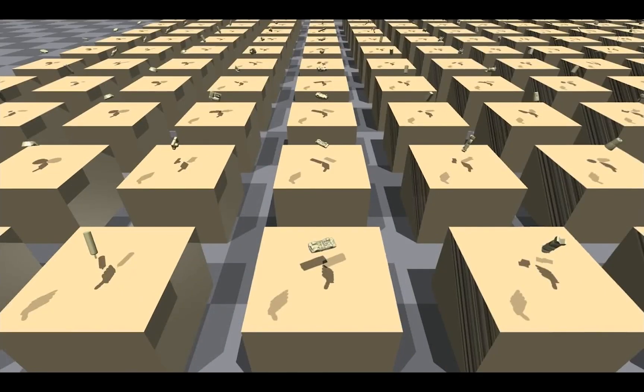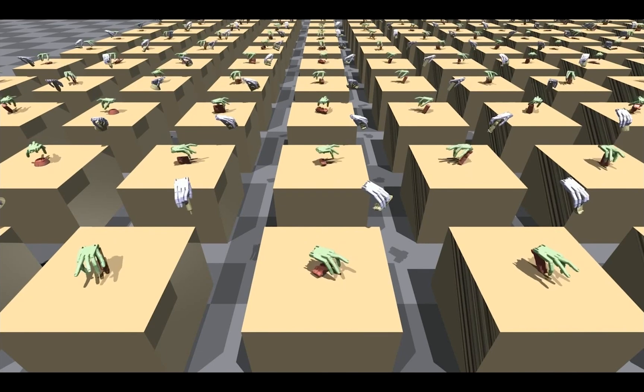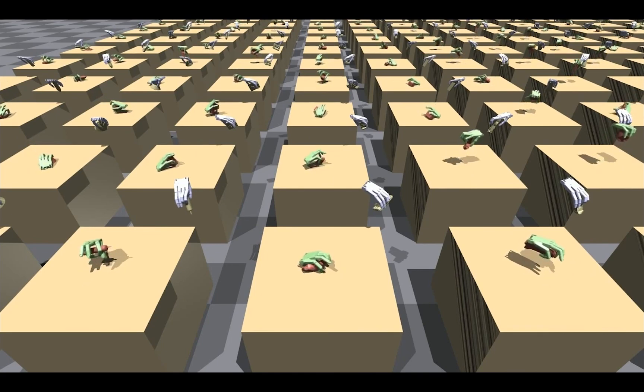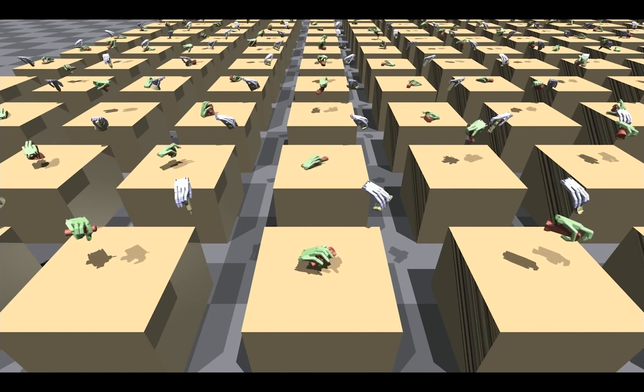We test our trained policy under two settings. First, we test on unseen objects in the seen categories. Second, we test on unseen objects in unseen categories. The goal grasp labels we use during testing are predicted from the object point cloud using our vision pipeline.